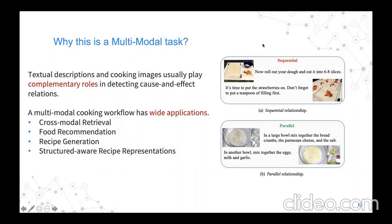For example, as shown in the top figure, these two steps are actually in sequential, but if we judge only from the text it is very hard to detect such relations, because the first text says 'roll out the dots' and the second step says 'it's time to put the strawberries on,' but it does not say to put the strawberries on the dots. However, this information is very easy to obtain from the cooking image, where we can see the strawberries are put on the dots. In the bottom example, two steps are in parallel — very hard to judge from pictures, but easy to detect from text, because the first step says 'in a large bowl' and the second says 'in another bowl.'